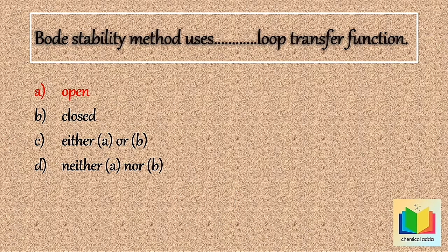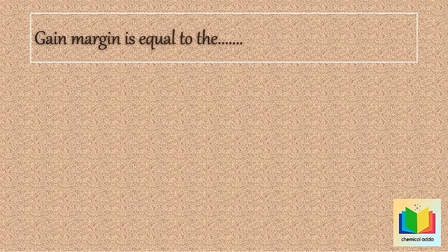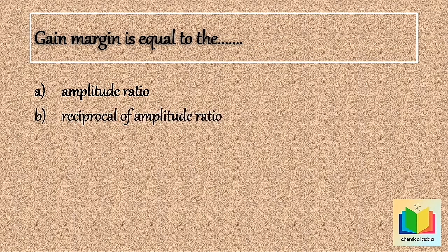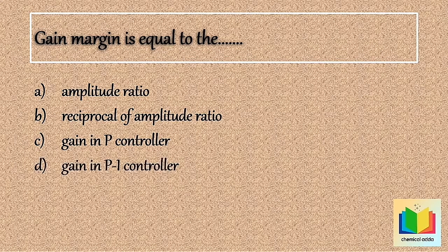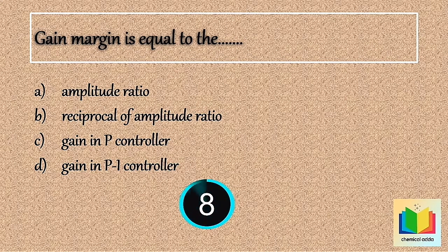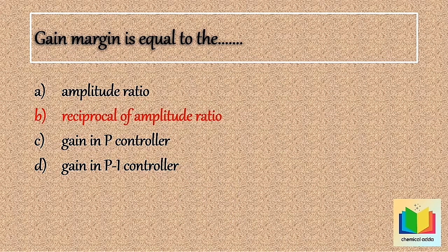Answer is option A: open. Now next question — gain margin is equal to: Option A) amplitude ratio, Option B) reciprocal of amplitude ratio, Option C) gain in P controller, Option D) gain in PI controller. Your time starts now. 10, 9, 8, 7, 6, 5, 4, 3, 2, 1. Stop. Answer is option B: reciprocal of amplitude ratio.